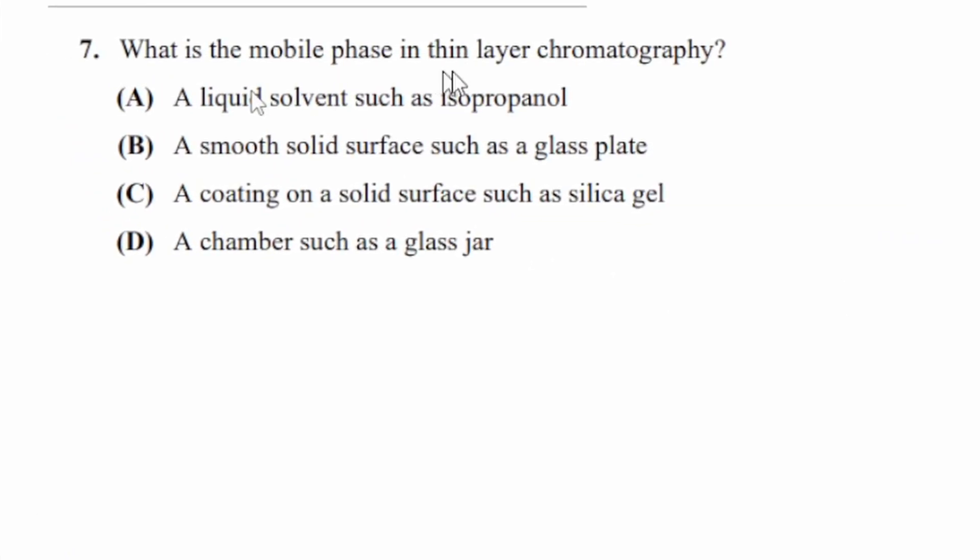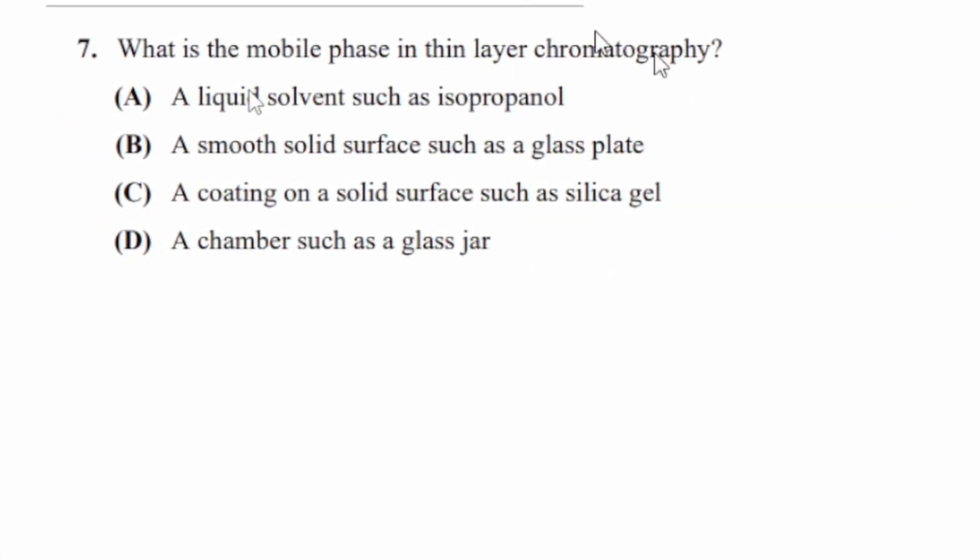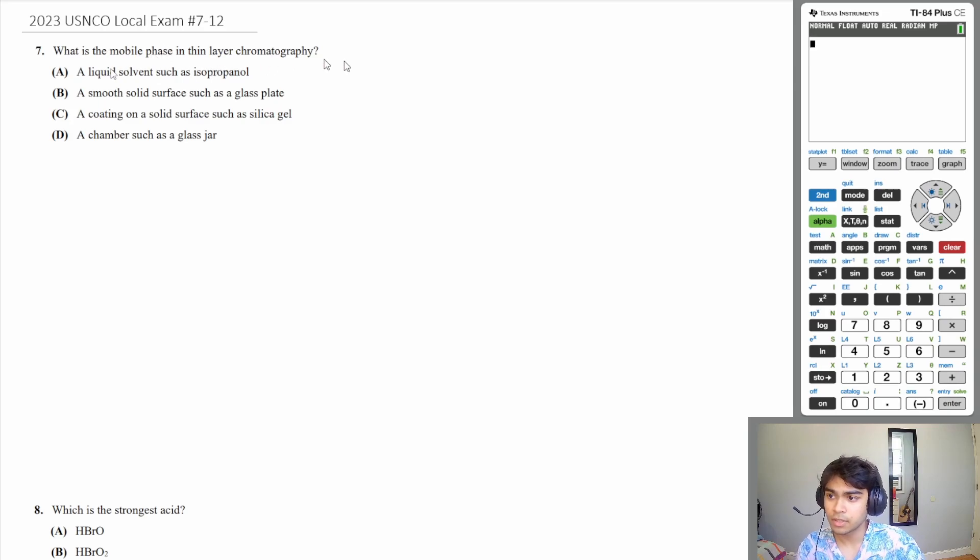Let's start with question 7. What is the mobile phase in thin layer chromatography? The mobile phase is going to be your liquid solvent. So let's go through our answer choices. A, a liquid solvent such as isopropanol. That's perfect. That's a liquid solvent. That's exactly what we need.